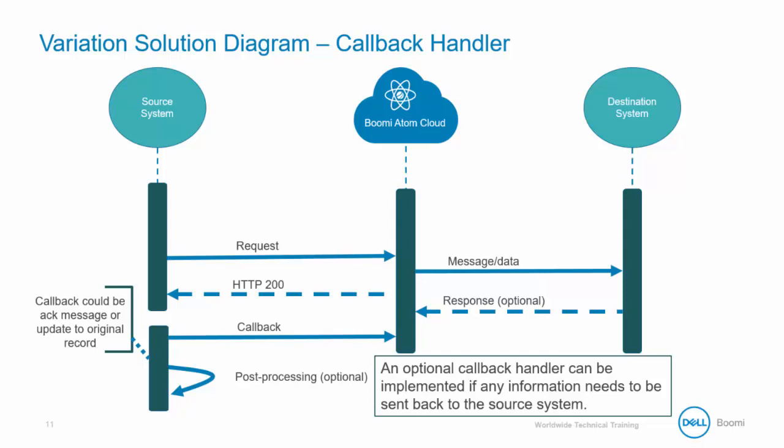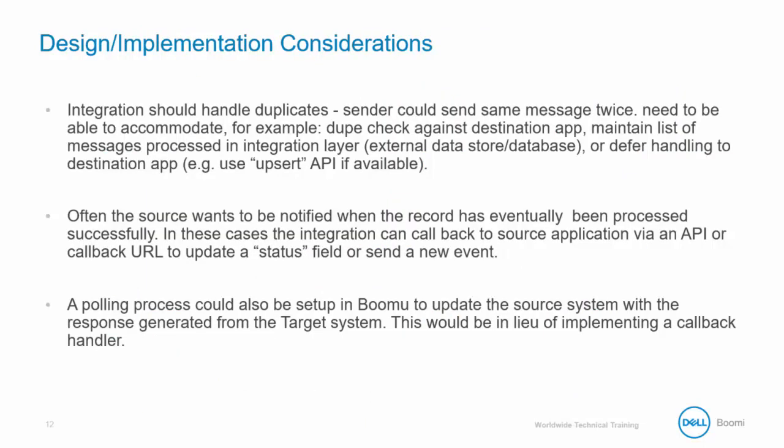The handler can be implemented if any information needs to be sent back to the source system. In this method, it's possible that the sender could send the same message twice, so the process needs to accommodate a duplicate check against a destination app, maintain a list of messages processed in the integration layer, or defer handling to the destination app — for example, an upsert API if available. Often the source wants to be notified when the record has eventually been processed successfully. In these cases, the integration can call back to the source application via an API or a callback URL to update a status field or send a new event. A polling process could also be set up in Boomi to update the source system with the response generated from the target system, as an alternative to implementing a callback handler.